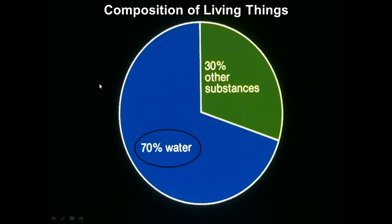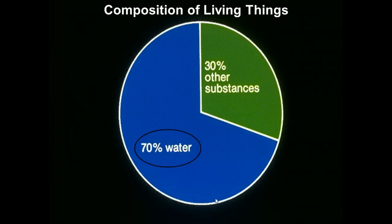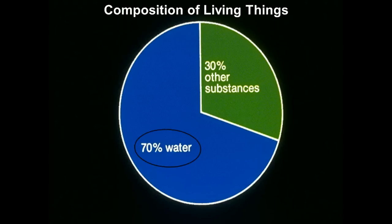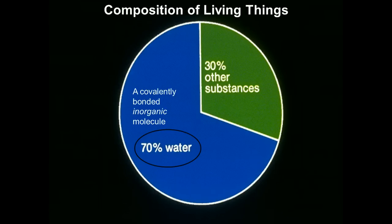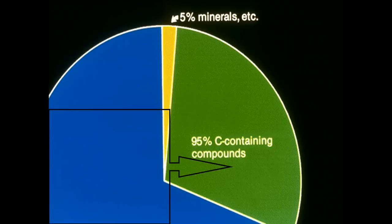When talking about the composition of living things, we need to understand the context. About 70% of all living things are made up of water, so it's important that we understand the properties of water — its polar nature and the hydrogen bonding it can make — in order to understand the chemical properties of all other molecules in this aqueous solution. When we focus on the other 30%, 95% of those substances are carbon-containing compounds — organic materials.